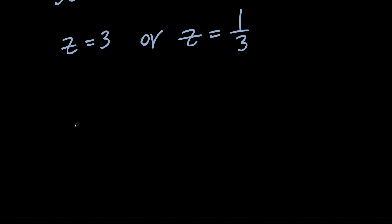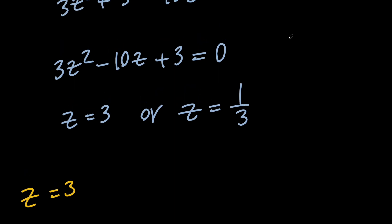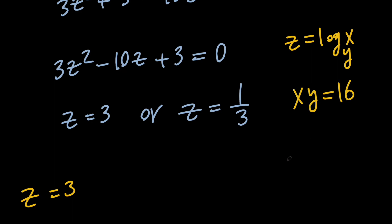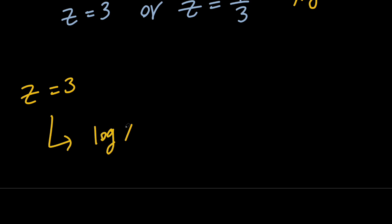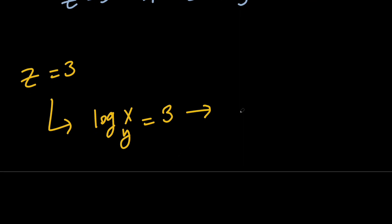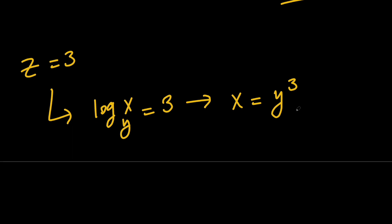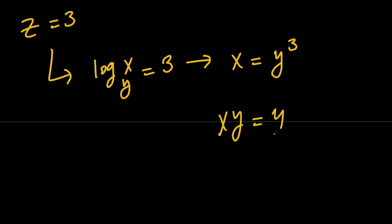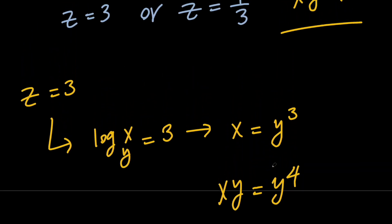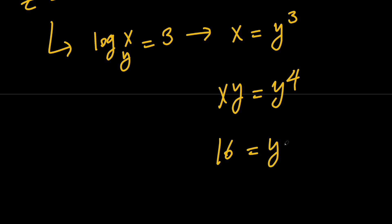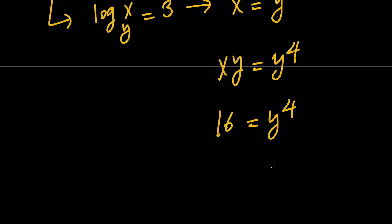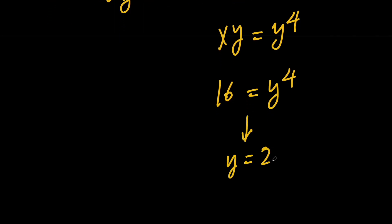Let's say z equals 3. Remember that z is log x with base y, and x times y equals 16. So log x with base y equals 3 means x equals y cubed. Since I want to use the value of x times y, let's multiply both sides by y to get x times y equals y to the power of 4. Now x times y is 16, so 16 equals y to the fourth. Since y is a positive quantity, y equals 2. And since x times y is 16, that means x equals 8. So this is the first pair of solutions.